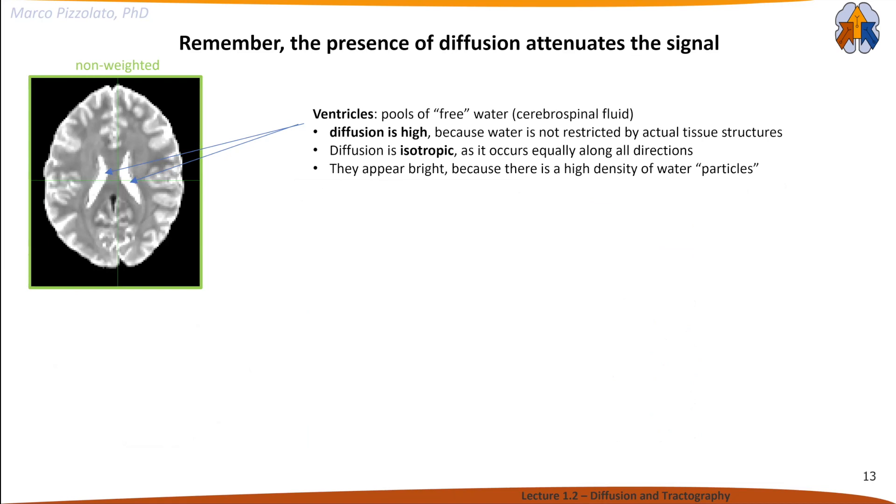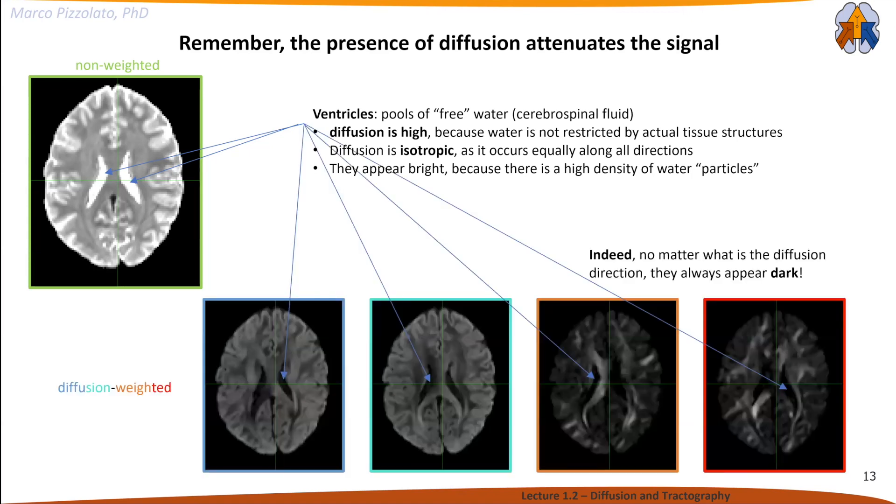To give you physical intuition: the presence of diffusion attenuates the signal. The ventricles are water pools in the middle of the brain, full of cerebrospinal fluid. Their diffusion is very high because it's not confined inside axonal structures, and it's isotropic because there are no barriers. If we look at diffusion weighted images, the ventricles always appear dark regardless of which direction we chose to encode diffusion.